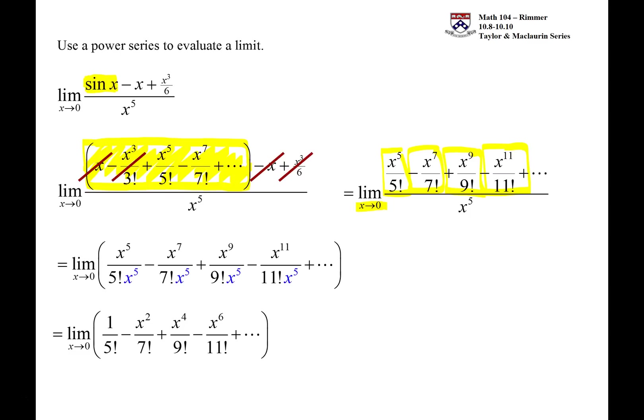We'll have x to the second and x to the fourth and x to the sixth and so on. And higher order terms—the dot dot dot is representing higher order terms that will be terms of x to some power, a higher power than what you already have. And remember, you're doing the limit as x goes to zero.